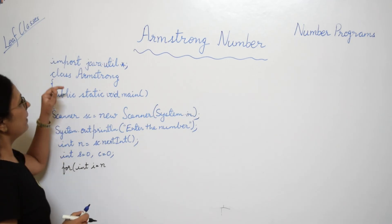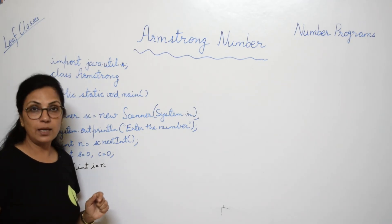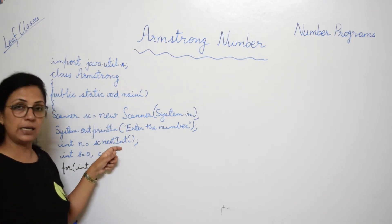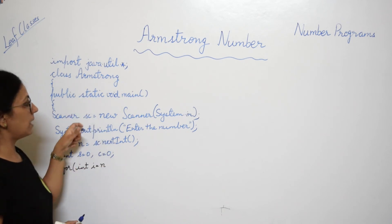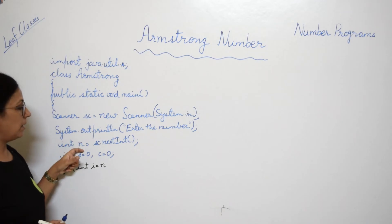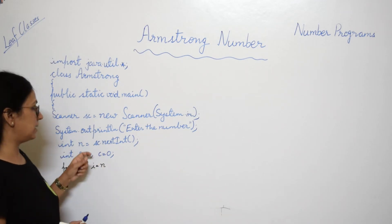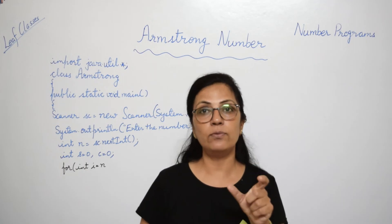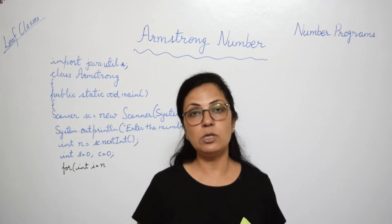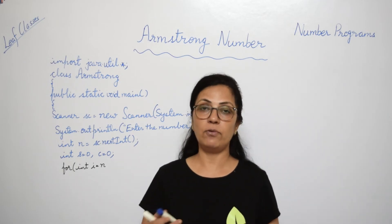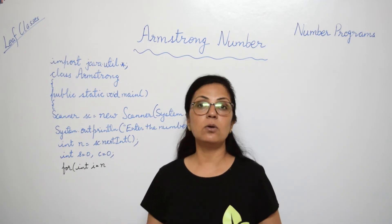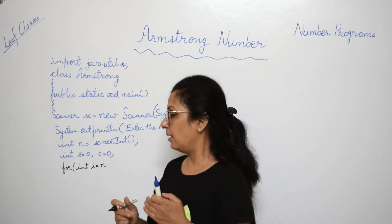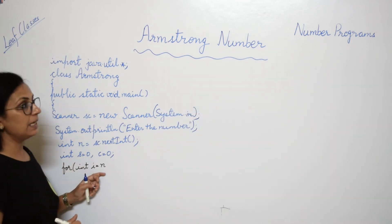Let's look at the program. I have used an import statement to include the util package because I want to use the Scanner class and the nextInt() function to input values. In the main class, we create the Scanner object, then input the number: int n = sc.nextInt(). Then s = 0 is used to accumulate the sum of powers of individual digits, and c = 0 is used to count the number of digits.